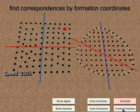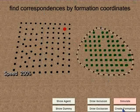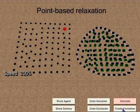Then we use a novel formation coordinate concept to find the corresponding position of each agent in the template. Once the candidate positions are selected, a point-based relaxation is applied to make the agents more naturally distributed.